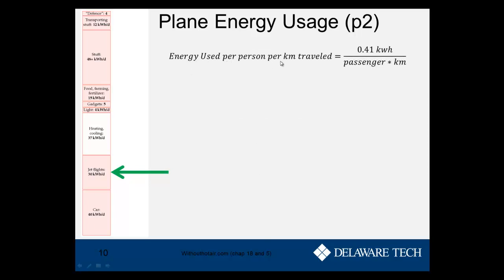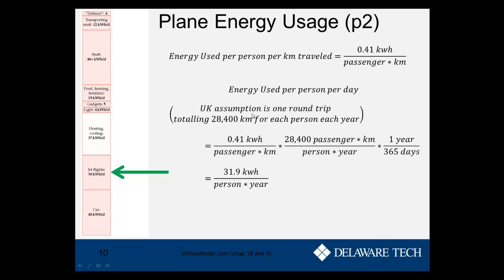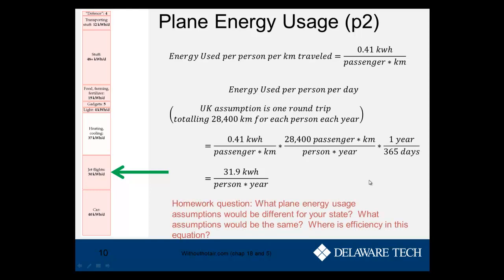To get energy in kilowatt hours per person per day, we take 0.41 kilowatt hours per passenger kilometer and multiply by 28,400 passenger kilometers per person per year — how many kilometers one person travels by air in a year — then divide by 365 days, which gives kilowatt hours per person per day. This is very close to what the author assumes for jet flights. For homework, answer: what assumptions on plane energy usage would be the same or different for your state, and where is efficiency in these equations?